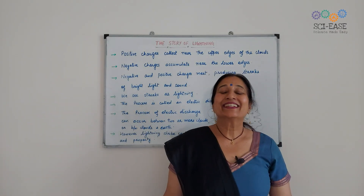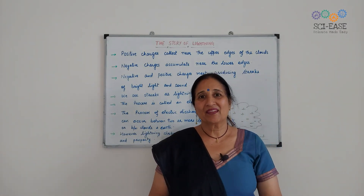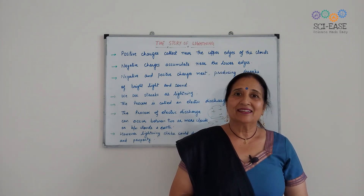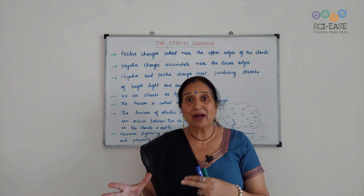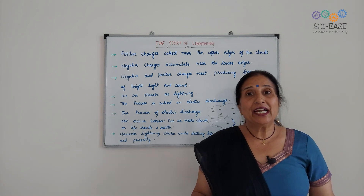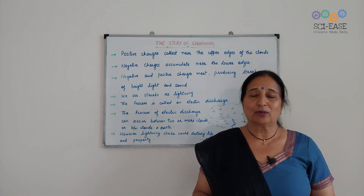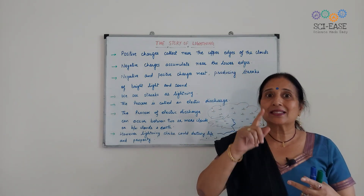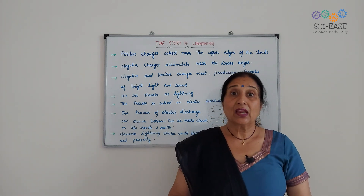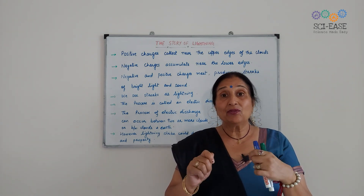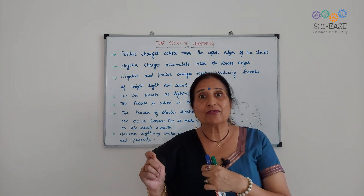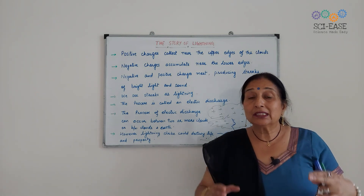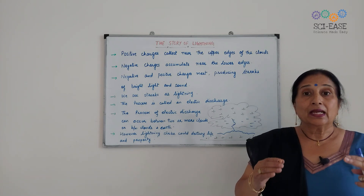Hello everyone, welcome to SAI EASE. It is now possible to explain lightning in terms of charges produced by rubbing. You have read in your class 7th about the thunderstorms, where the air current moves upward and the water droplets move downwards. This vigorous movement results in the separation of charges. I want to tell you the story of lightning in this video.